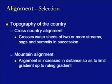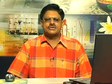Cross country alignment involves possibilities of sags (depressions) and summits (top points) coming in succession, because the alignment crosses watershed areas of two or more streams. The watershed area is the point from which water moves on either side, so the alignment passing through watershed conditions avoids water logging, drainage problems, and flooding, but comes across sags and summits in succession.